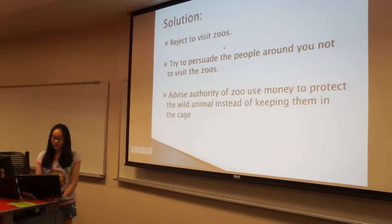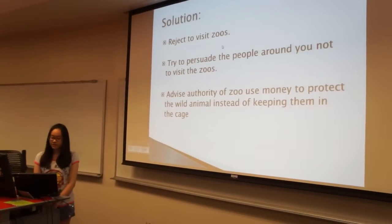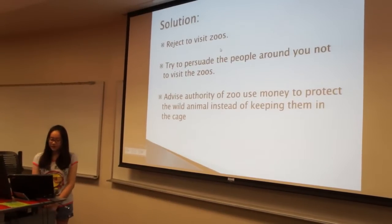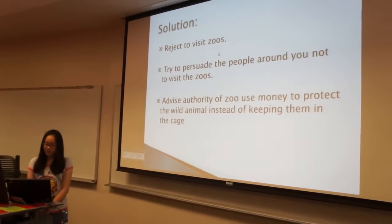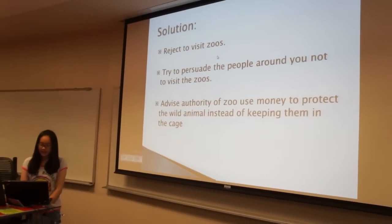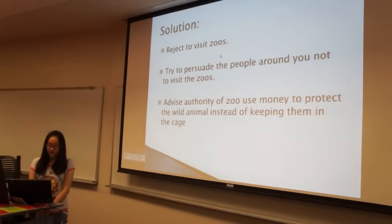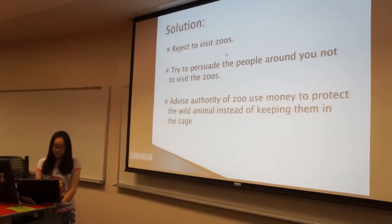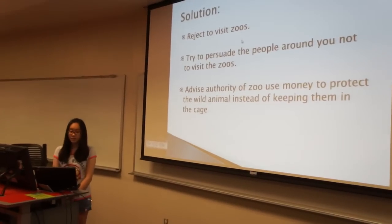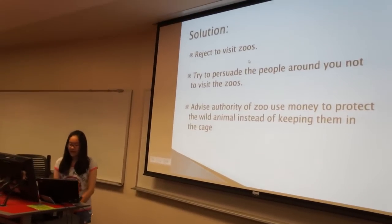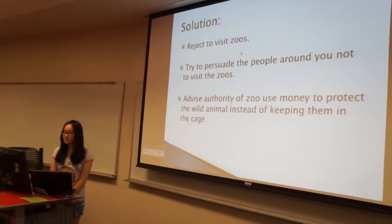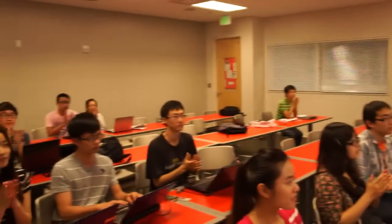In conclusion, animals don't belong in zoos. They should be released to nature. Being in the cage makes them nervous and depressed. They will lose their natural behaviors and freedom in zoos. They should run in the forest, not be exploited by us. Stop visiting zoos and try to persuade the people around you to do the same. Try to advise the authorities of zoos to use money to protect wild animals instead of keeping them in cages. By doing this, you are helping animals get rid of cages and depression. Animals are like our friends, and now you are helping them to gain their rights and freedom. So please do it. Thank you. That's my speech.